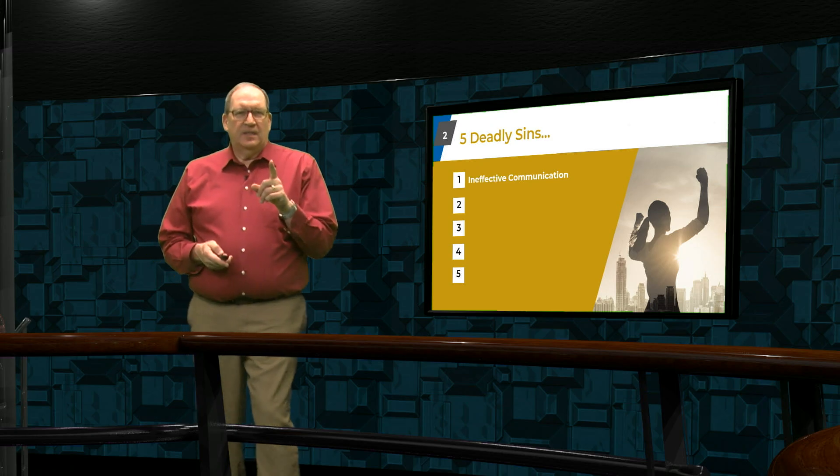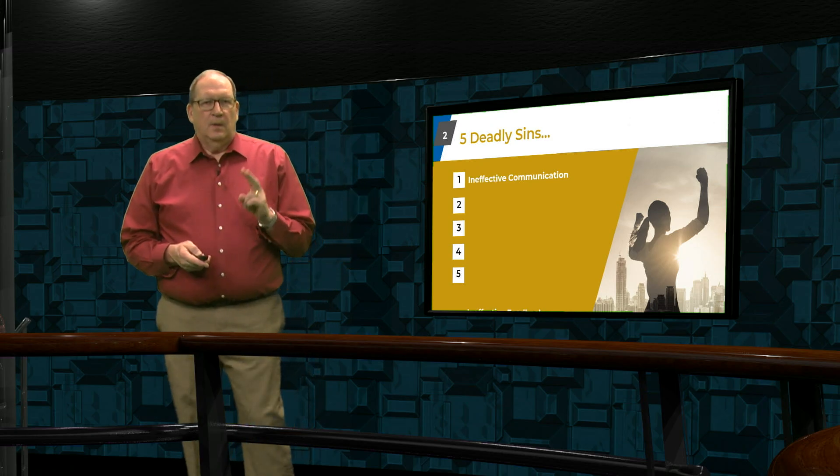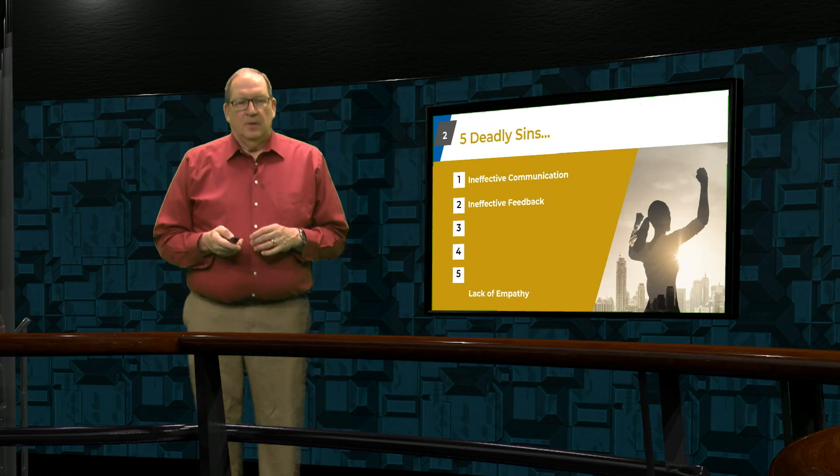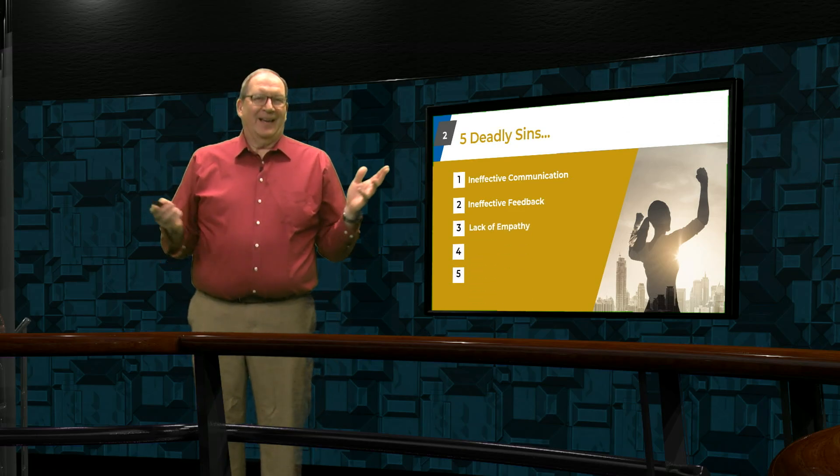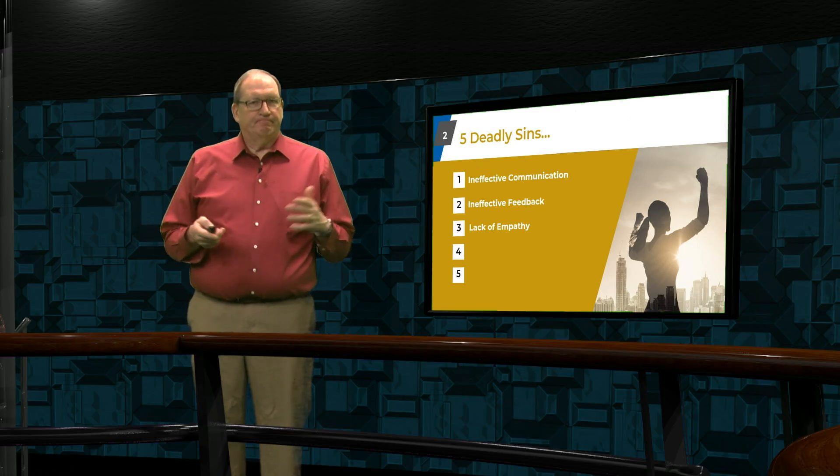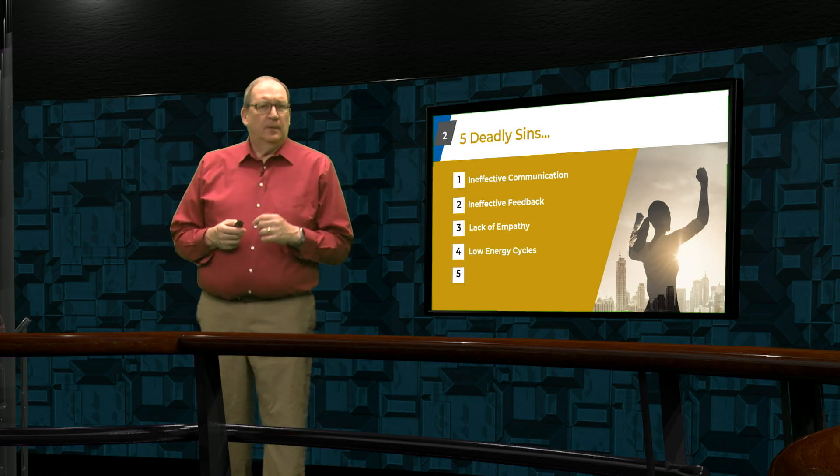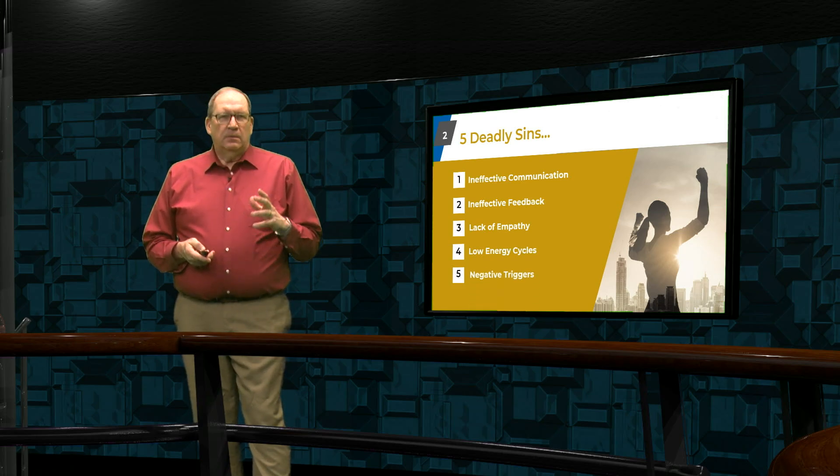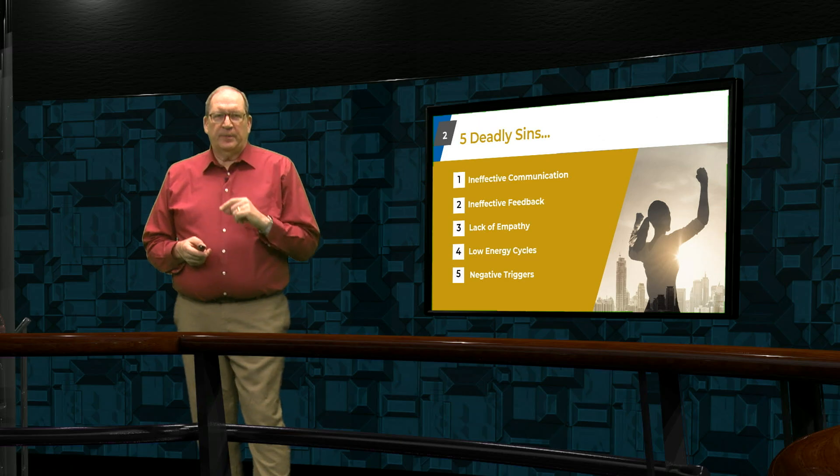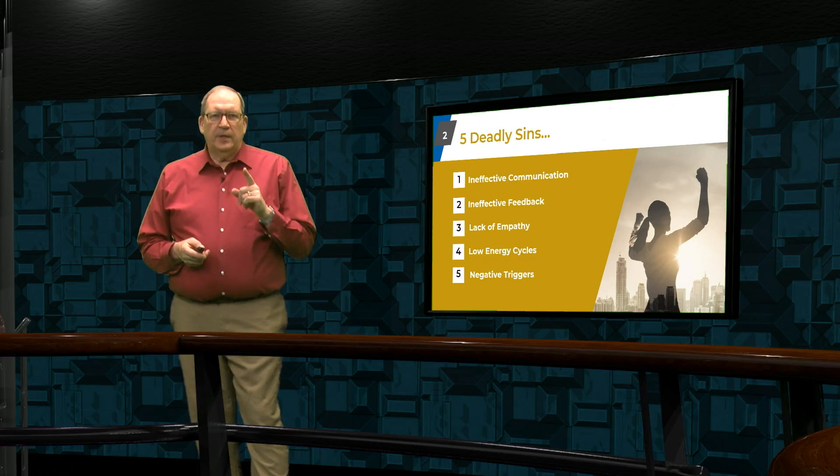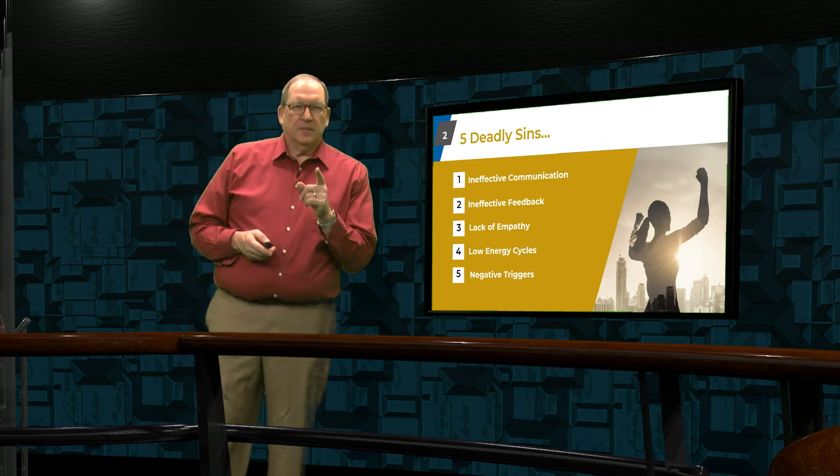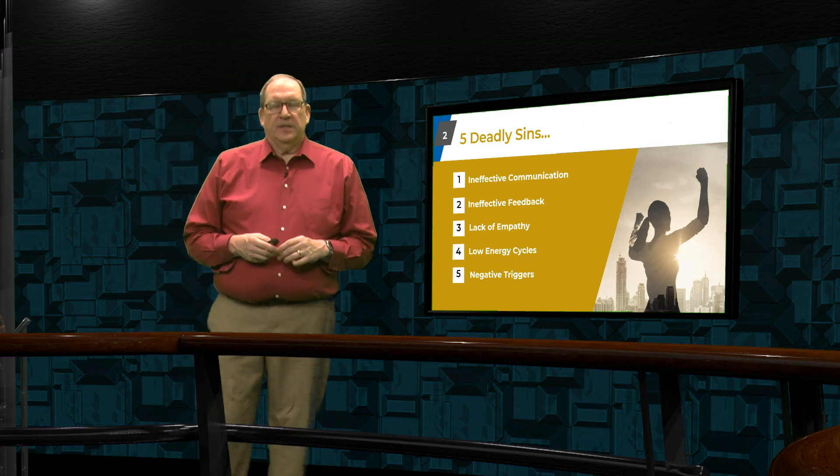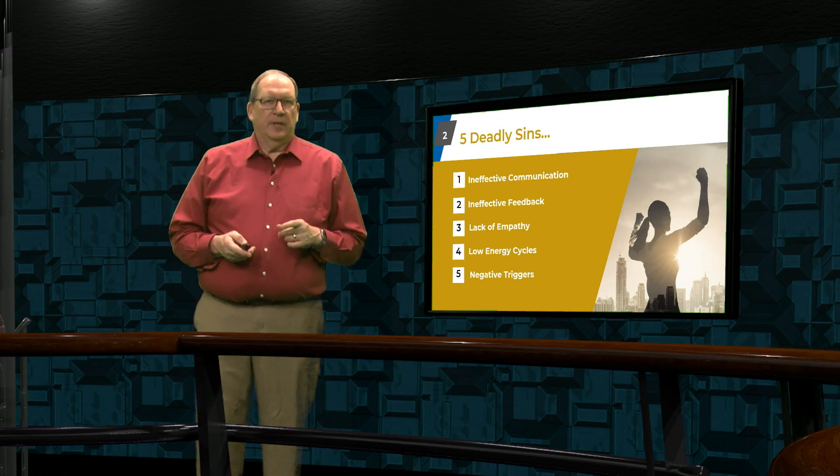In today's mission, we're going to talk about these five deadly sins, but more importantly, what you can do to eradicate some of them so that you can be more effective as a leader. So let's share what these five are. First deadly sin is ineffective communication. Our second, ineffective feedback. Our third is lack of empathy or not displaying it. Fourth, what I call low energy cycles. And lastly, these things called negative triggers, which can get you extremely emotional.